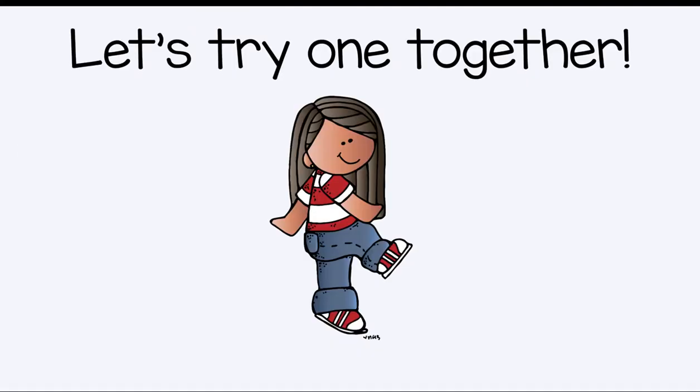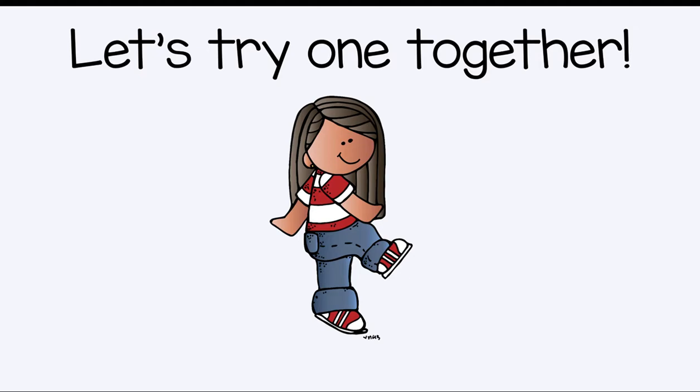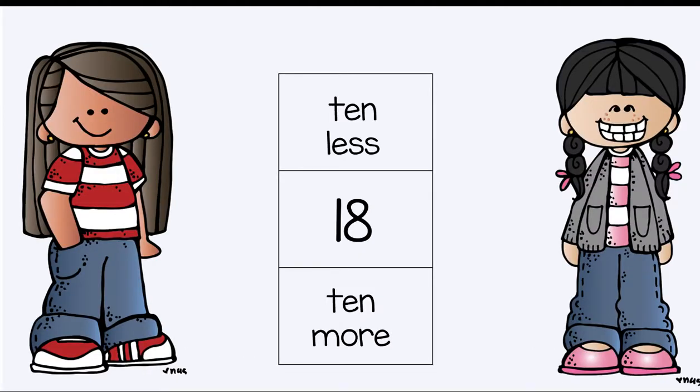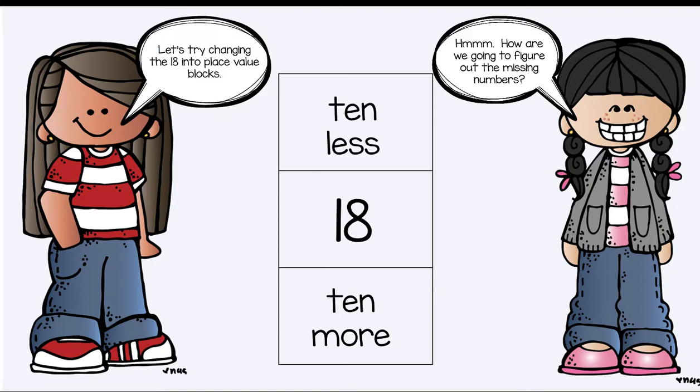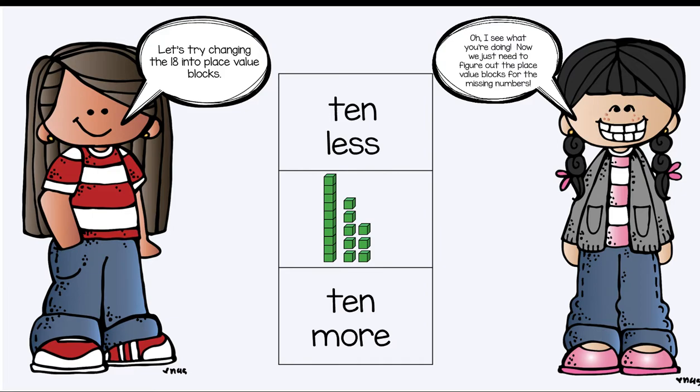You are very observant. Let's try one together. Get your whiteboard ready. How are we going to figure out the missing numbers? Let's try changing the 18 into place value blocks. So we have one 10 stick and eight ones. Oh I see what you're doing. Now we just need to figure out the place value blocks for the missing numbers.